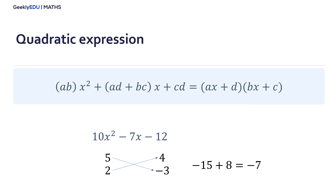When I chose the numbers 4 and minus 3, I thought that since the middle number minus 7 is a negative one, the addition of the cross multiplication must also be negative. Since 5 times 3 is bigger than 2 times 4, the negative sign goes to minus 3. The final answer is derived by reading the cross multiplication diagram horizontally: the factors are 5x plus 4, multiplying 2x minus 3.